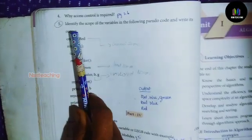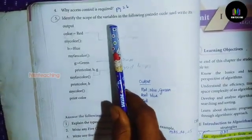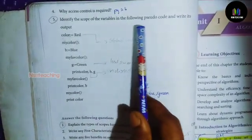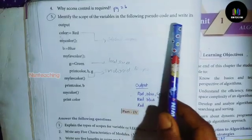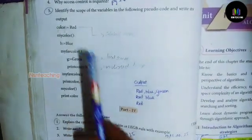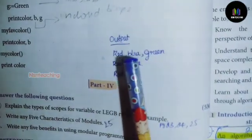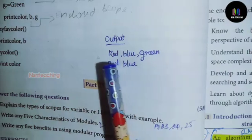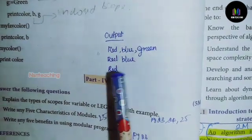Question number 5: Identify the scope of variables in the following pseudo code and write its output. Answer output: Red, blue, green. Red, blue, red.